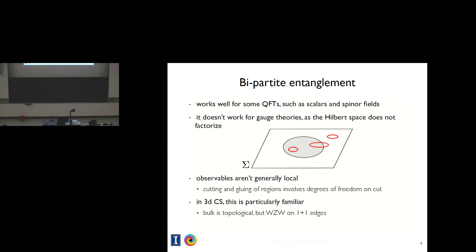What this is pointing to is the fact that if one considers cutting open space in gauge theories, there really are degrees of freedom that will emerge on the edges of the regions. In 3D Chern-Simons theories in particular, this is actually very familiar. The bulk theory — the theory in three dimensions — is topological. When one cuts it open, one sees that there's 1+1 dimensional physics on any surface, which at low energies is given by a Wess-Zumino-Witten conformal field theory. So part of what I want to do today is focus on these edge modes and show you a detailed computation where these things play a central role.